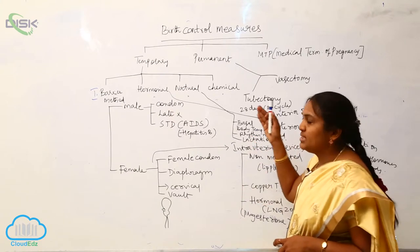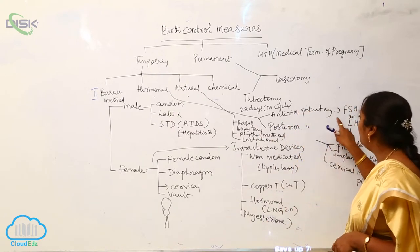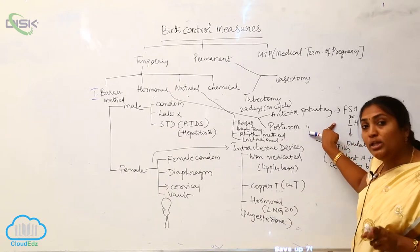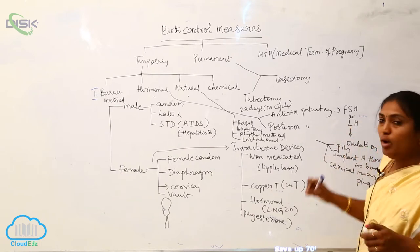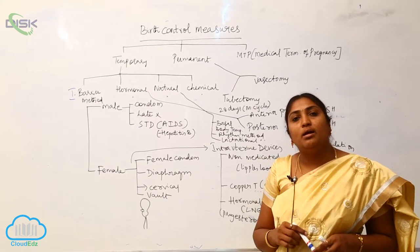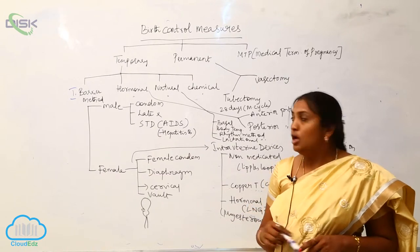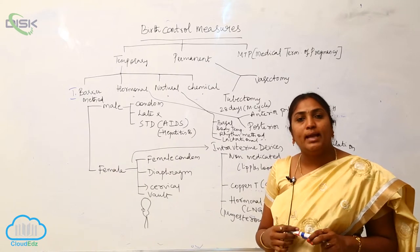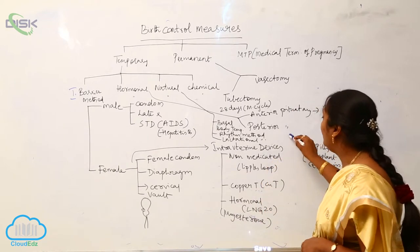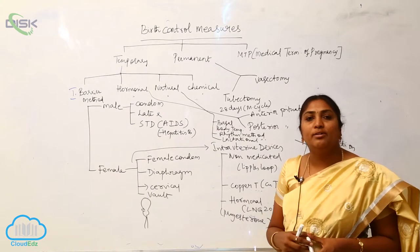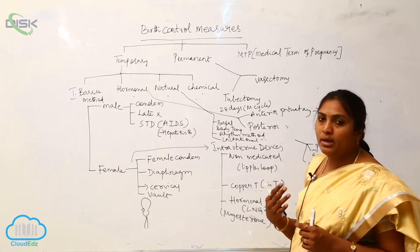So to recap the barrier methods: in males it is condom, latex, and STDs, whereas in females it is female condoms, diaphragm, and cervical walls. The next temporary method is the hormonal method. The anterior pituitary gland, in both males and females, releases follicle stimulating hormone (FSH) and luteinizing hormone (LH). In females, FSH and LH enhance the process of ovulation. In the hormonal method, pills are given to control this process of ovulation, and the anterior pituitary gland secretions are also influenced by these pills.